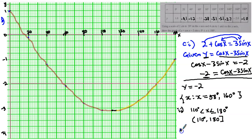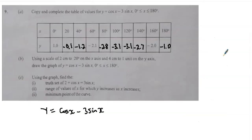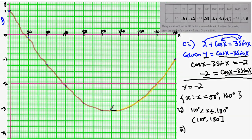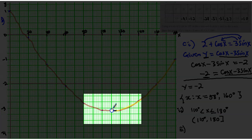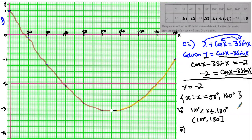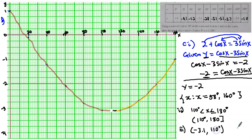For part c(iii), find the minimum point of the curve. Look at the lowest point on the graph — that is the minimum. The x-value there is approximately 100° and the y-value is negative 3.1. So the minimum point is (100, -3.1). The examiner allows plus or minus 2, so you still get the mark if you are close.